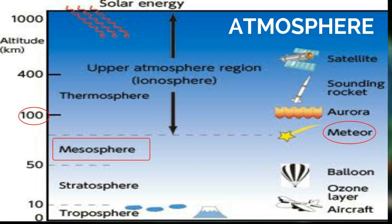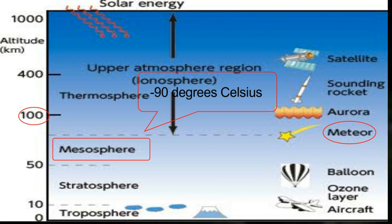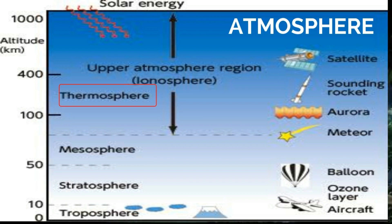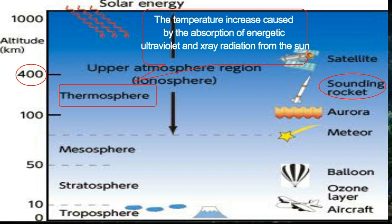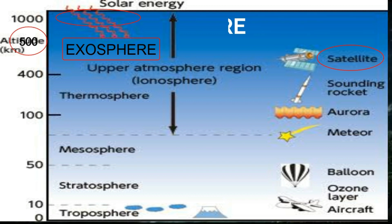Above the stratosphere is the mesosphere, where the temperature again decreases with height, reaching a minimum of about negative 90 degrees Celsius. The thermosphere is the region in which temperature increases, caused by the absorption of ultraviolet and X-ray radiation from the sun. The exosphere is the last region, at about 500 kilometers, and it contains mainly oxygen and hydrogen atoms which sometimes collide.